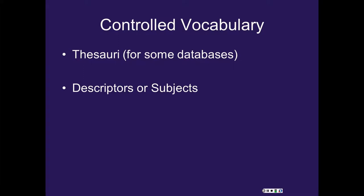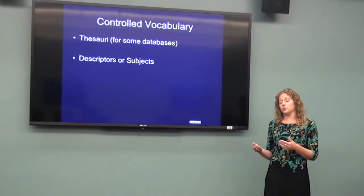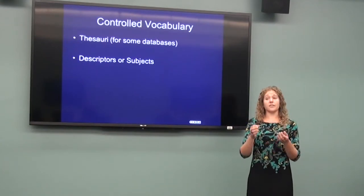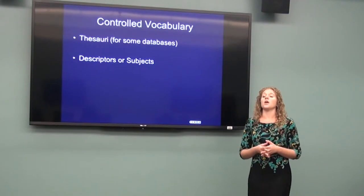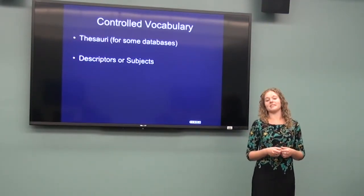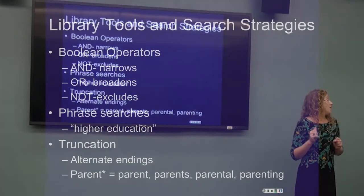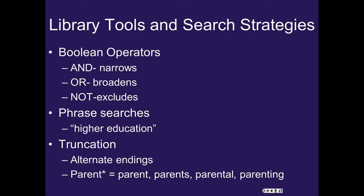Since I don't feel comfortable trying to guess every keyword an author might have used, another option for searching is to use controlled vocabulary. A lot of library resources have their own thesaurus and something called subject heading searching. When you use that kind of controlled vocabulary, it will ensure that the article results you retrieve are relevant to your topic and that the terms you enter are a major focus of that article. You don't have to worry about British versus American spelling — it will tell you which term that particular resource wants to use for that concept.